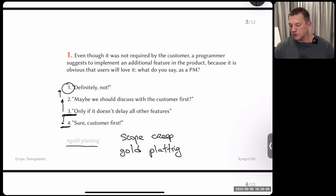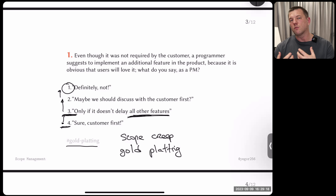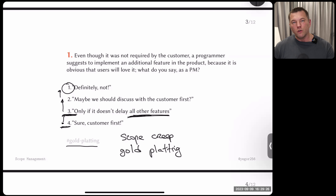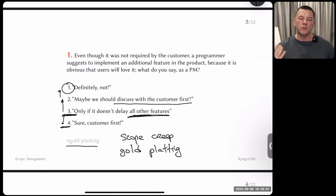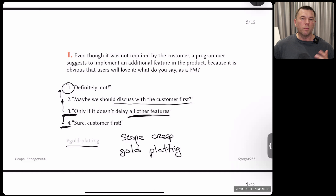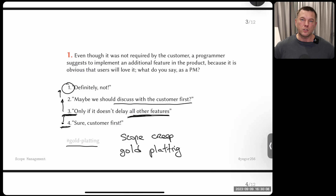At least first check: if it doesn't delay all other features, then maybe we care about the extra feature. But we shouldn't play the role of a user — the user has their own representative in the project, maybe the customer or someone else. Programmers are not a good source of this information. The programmer may suggest an idea — we write it down and go to the customer to ask. We shouldn't throw the idea away, but we definitely should not allow the programmer to start working on it.